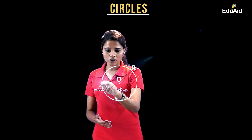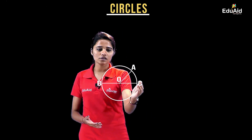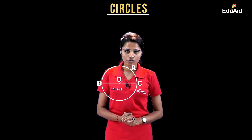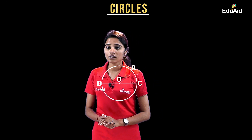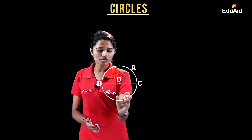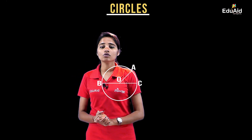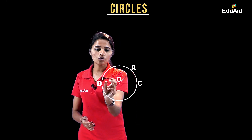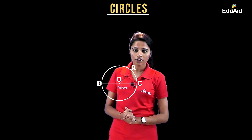If we draw line BC, then BOC is known as the diameter of the circle, and the midpoint of this line is nothing but the centre of the circle. That means OB is equal to OC, and their lengths are also equal to OA. So OA, OB, and OC are all radii of this circle.